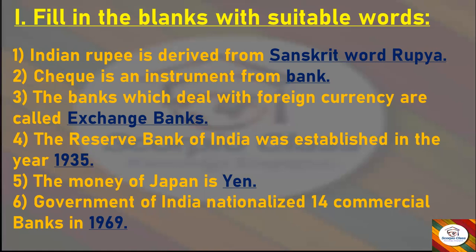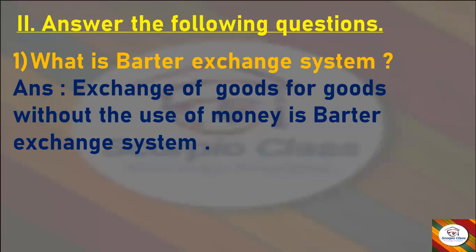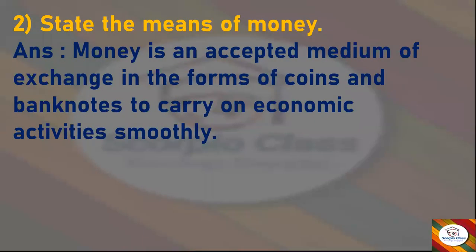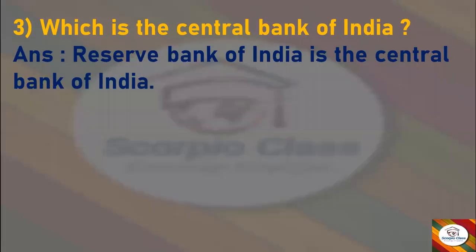These are the fill in the blanks of this chapter. Now let's move to the second main, that is Answer the Following Questions. The first question is: What is barter exchange system? Answer: Exchange of goods for goods without the use of money is the barter exchange system. Next question: State the meaning of money. Answer: Money is an accepted medium of exchange in the forms of coins and banknotes to carry on economic activities smoothly. Next question: Which is the central bank of India? Answer: Reserve Bank of India is the central bank of India.